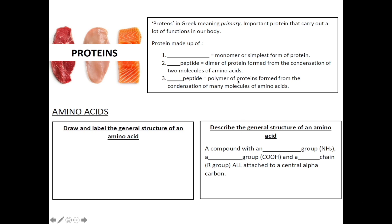Proteins are made up of a monomer, a dimer, and a polymer. The monomer of protein is known as amino acid — it is the simplest form of proteins. The dimer of protein is called the dipeptide, formed from the condensation of two molecules of amino acids. The polymer of proteins is known as polypeptide, and it is formed from the condensation of many molecules of amino acids.